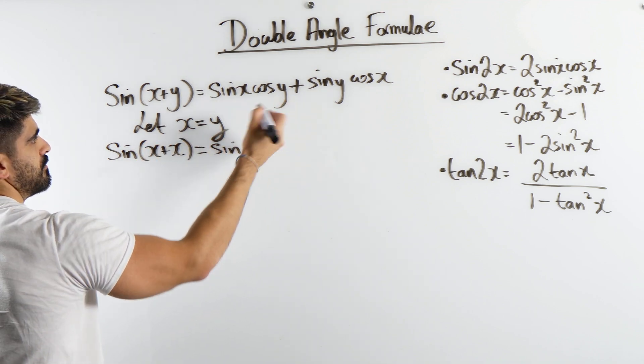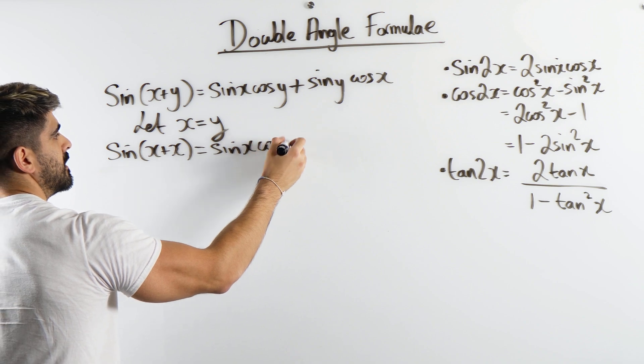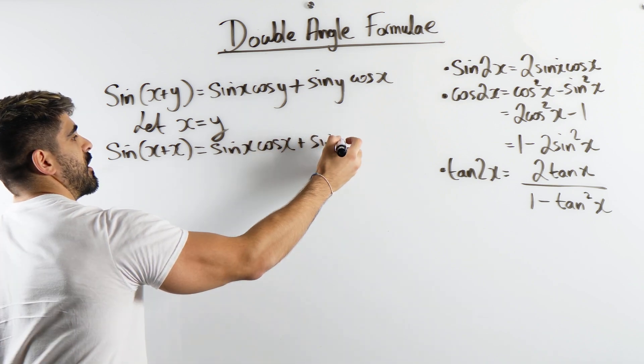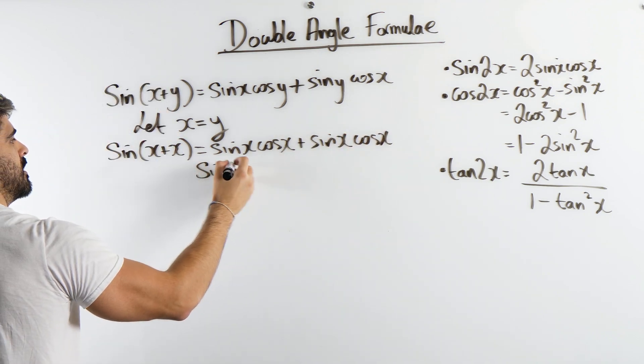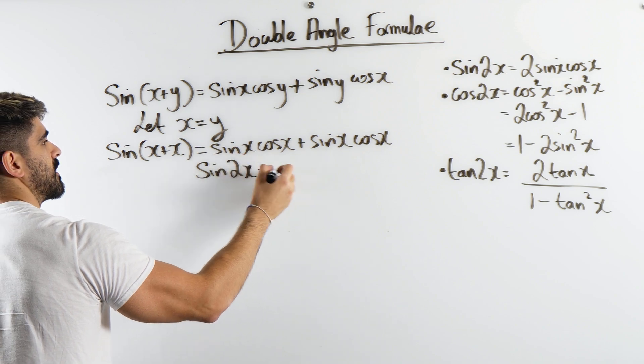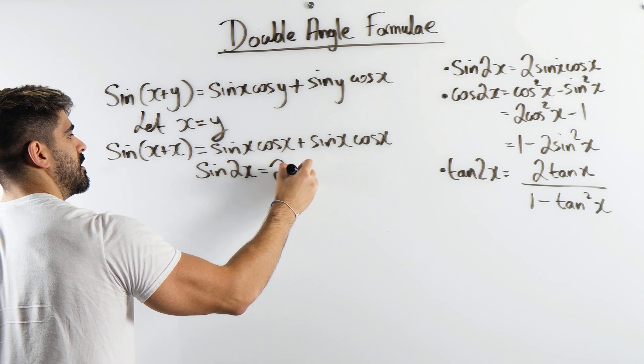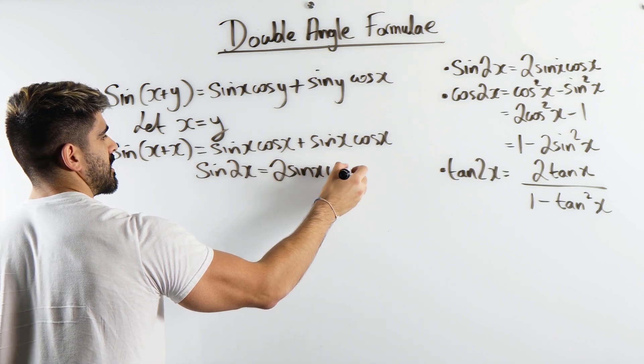Now when they are the same we get sin of x plus x is, remember, sin, here I'm basically just copying the same thing, it's just wherever I see y I'm replacing it with x. And there we go, we're done. So we have sin of 2x is, these two are the same, 2sin x cos x.